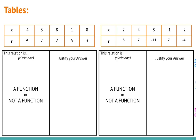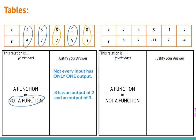Looking at the first table, we need to determine if each x has only one y. For negative 4, 3 and 7, and 1 and 5, they each have only one output. But the problem is when it gets down to 8 — 8 has an output of 2 and 8 has an output of 3. Because 8 has two different outputs for one input, it is not a function. We justify our answer by saying not every input has only one output: 8 has an output of 2 and an output of 3.